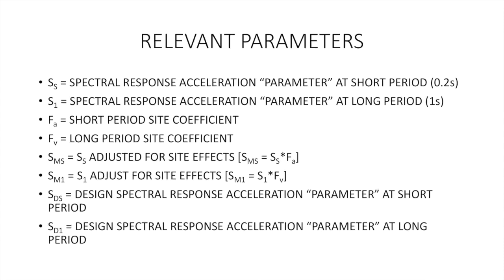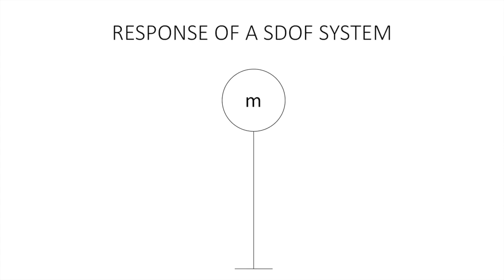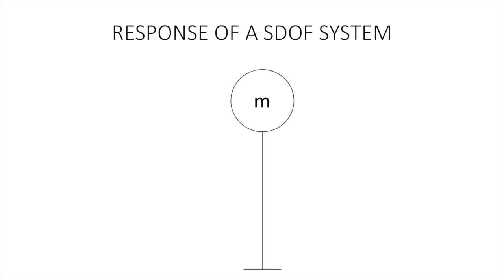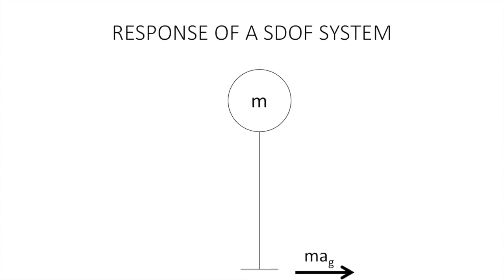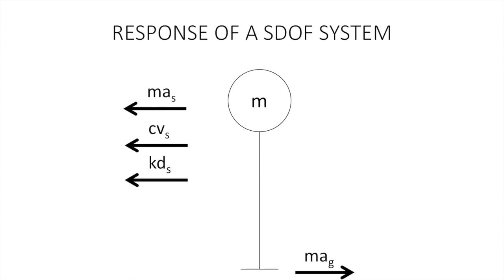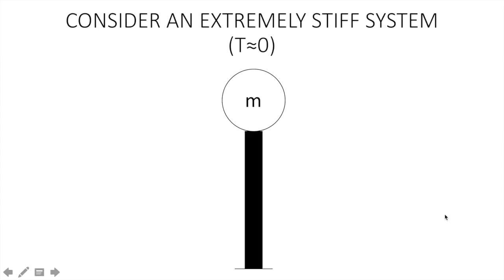Back to the idea of a single degree of freedom system — the response to some ground motion is based off this fundamental equation of motion. We have a force in a particular direction equal to mass times ground acceleration, which equals mass times system acceleration, plus the damping force (damping coefficient times velocity), plus the spring force (stiffness times displacement). This gives the classical equation of motion: M·X̄̈ + C·Ẋ + K·X = -M·Ẍ_G, where X̄̈ is acceleration, Ẋ is velocity, X is displacement, and Ẍ_G is ground acceleration.